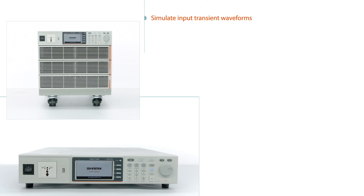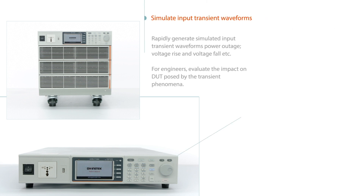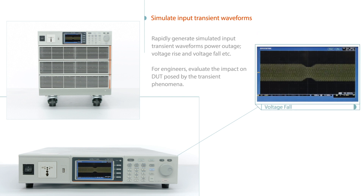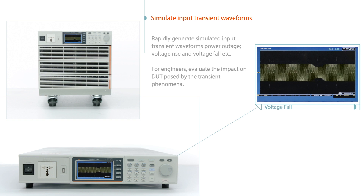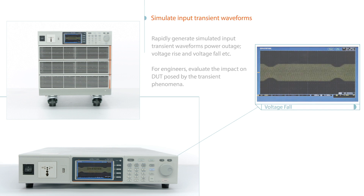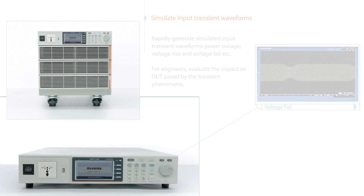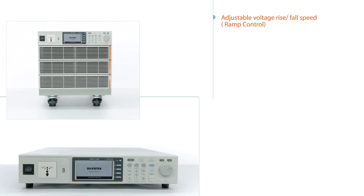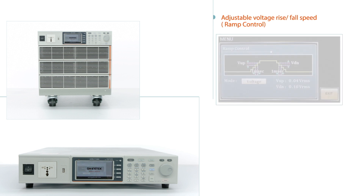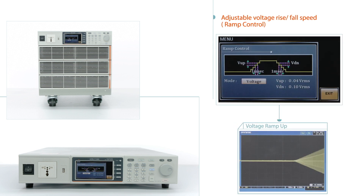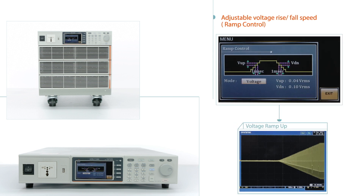This mode can rapidly produce different simulated input transient waveforms such as power outage, voltage rise, and voltage fall, for engineers to evaluate the impact on DUT posed by transient phenomena. Ramp control allows users to set output voltage rise or fall speed, which is based on time or voltage.